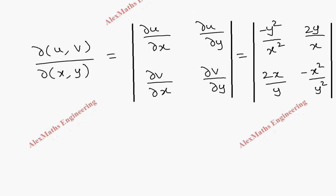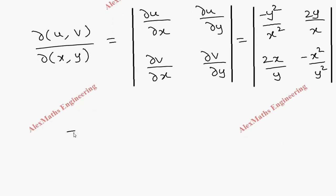Multiplying the leading diagonal, it will become y²/x² times x²/y² which becomes positive, then minus the other diagonal terms: 2x/y times 2y/x.